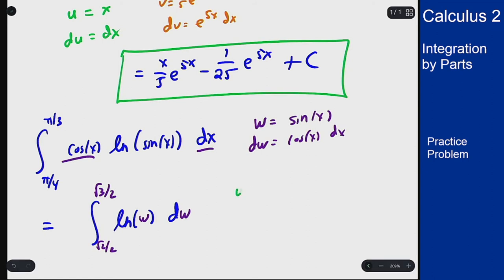So we're going to let u, the part we differentiate, be the logarithm. Then du is 1 over w dw. And my v, the part I want to integrate for the dv, is just dw so v is just w.